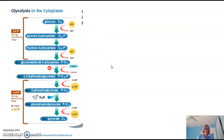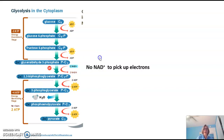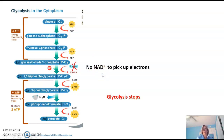What about glycolysis? There's a reaction in glycolysis that also requires NAD+ to pick up electrons in order for the reaction to happen. If there's no NAD+ to pick up the electrons, this reaction won't happen and glycolysis will stop.